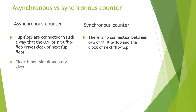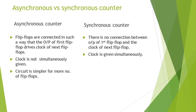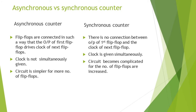In asynchronous counter, the clock is not given simultaneously, whereas in synchronous counter the clock is given simultaneously. The circuit is simpler for more number of flip-flops in the asynchronous case, since the clock of the next flip-flop is just the output of the previous one — there is no change in the circuit as we increase the number of flip-flops. But in synchronous counter, the circuit becomes more complicated for more number of flip-flops.